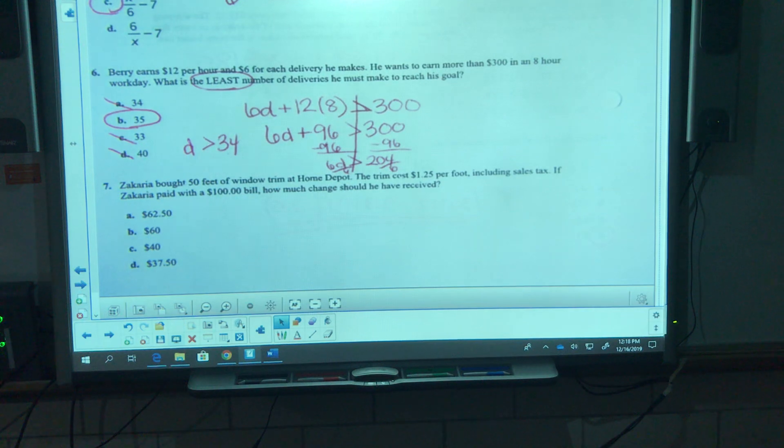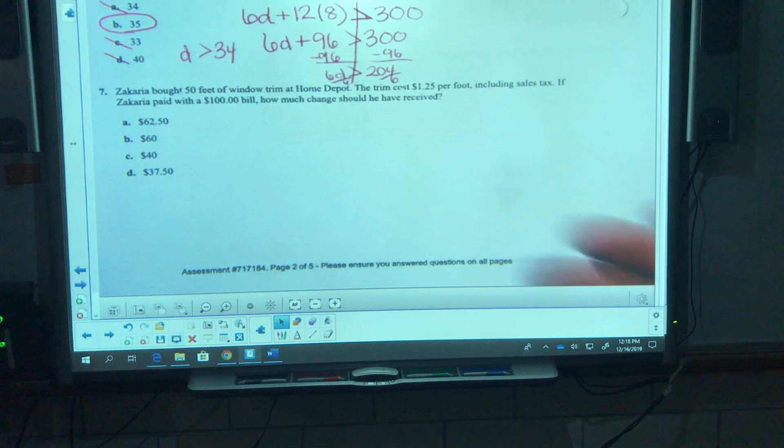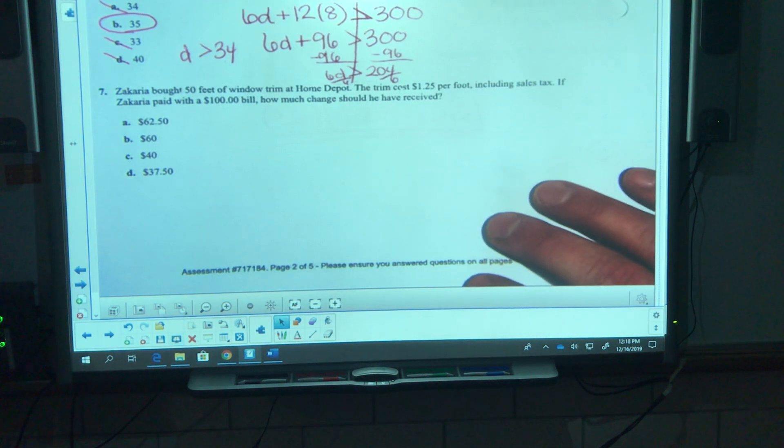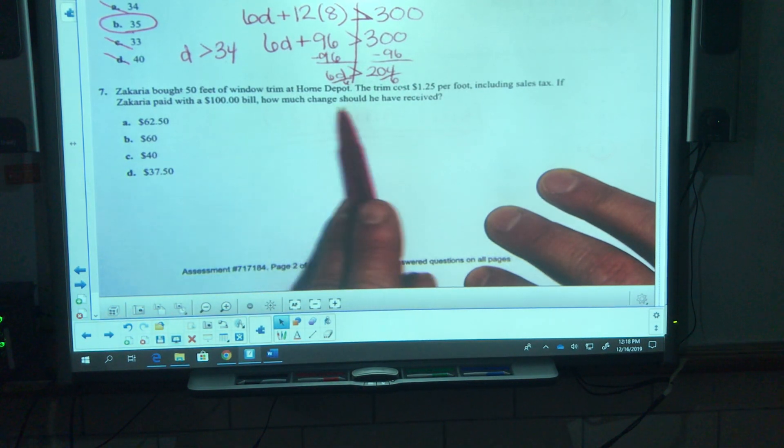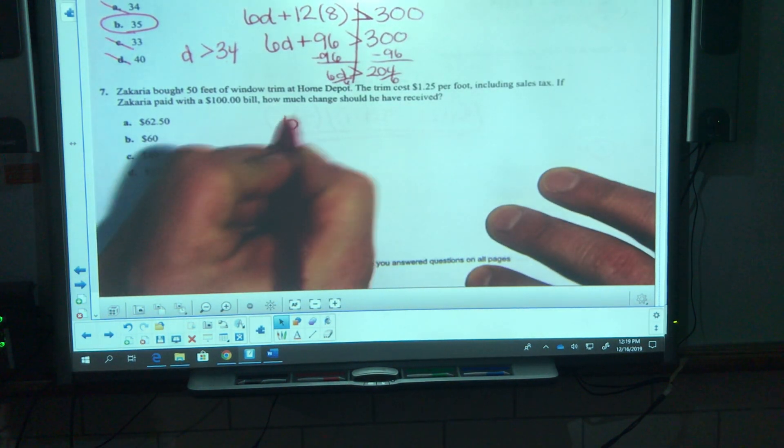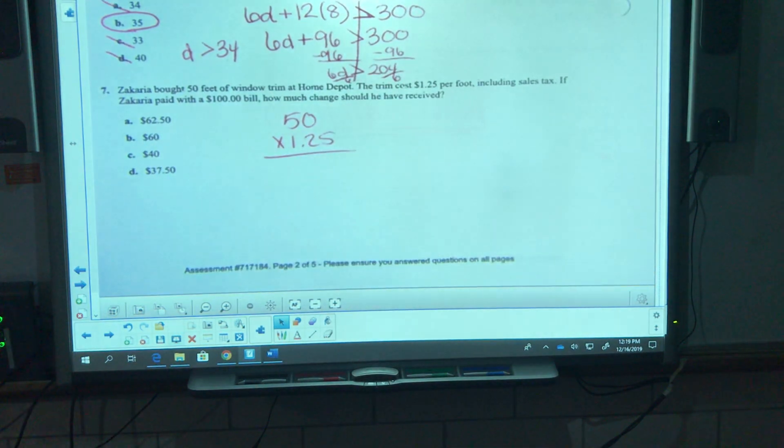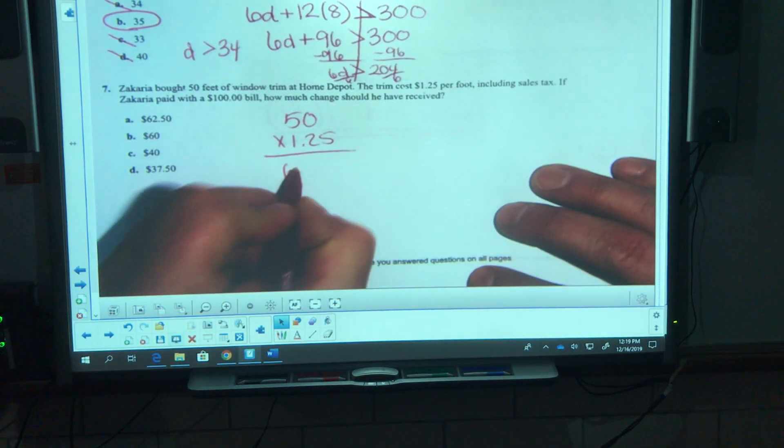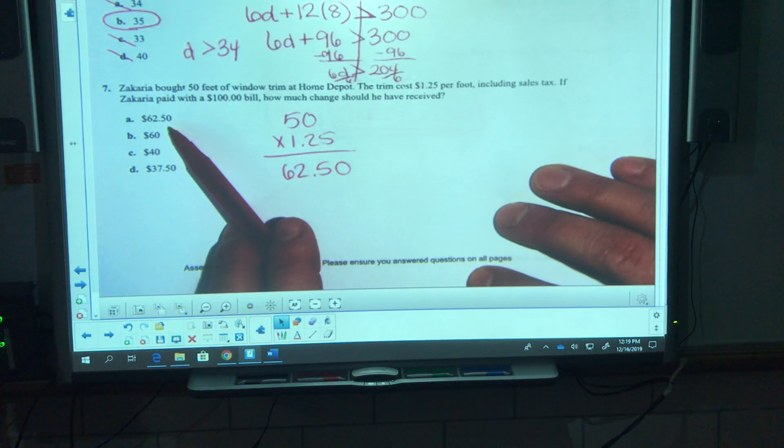Number seven, Sakaria bought 50 feet of window trim at Home Depot. The trim cost a dollar 25 per foot including sales tax. If she paid with a hundred dollar bill, how much change should he have received? So 50 feet times the dollar 25 means he's spending a total of 62.50.